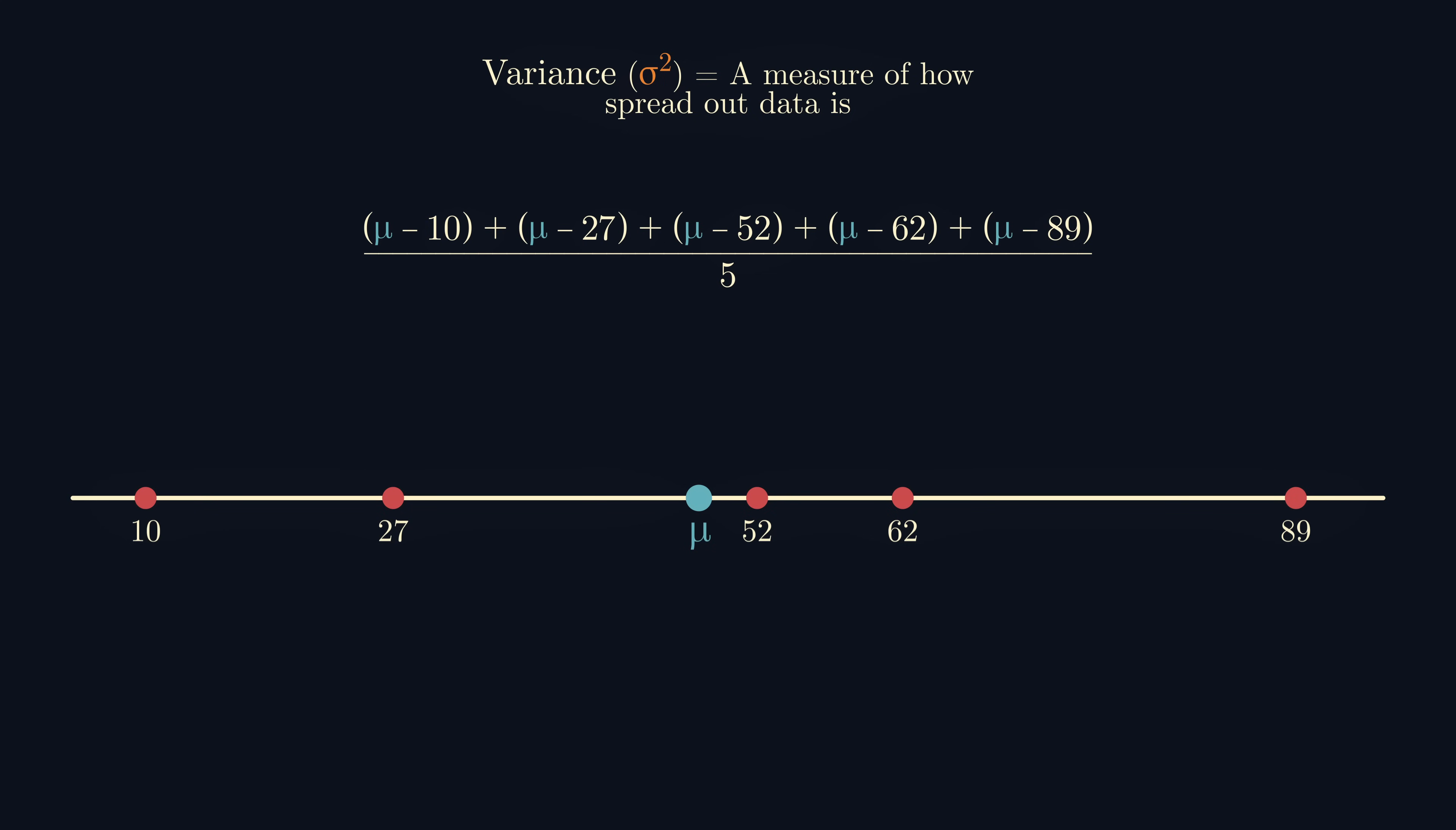But unfortunately, all these terms end up cancelling out to zero no matter what the initial data points were. We could perhaps take the absolute value of each term, but this tends to make the algebra more difficult to work with. The way that we solve this is to square the difference between the mean and each data point to ensure that it's positive.